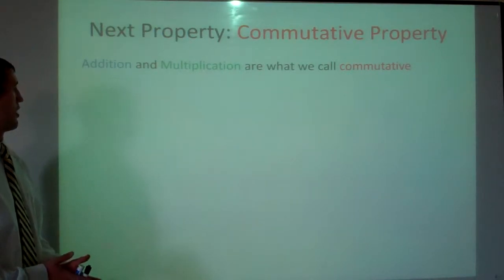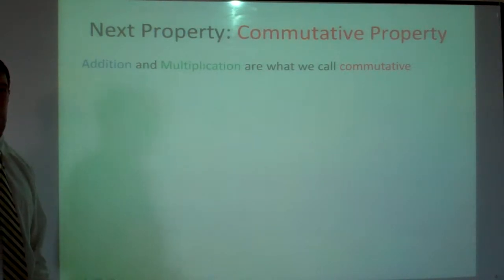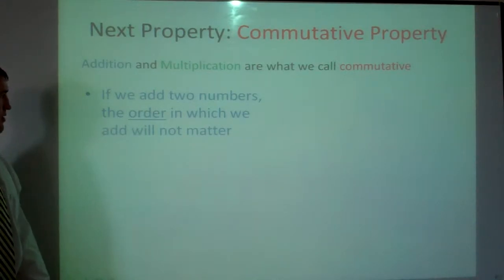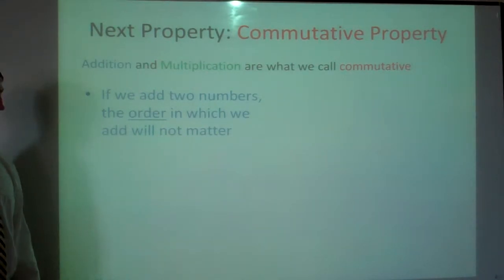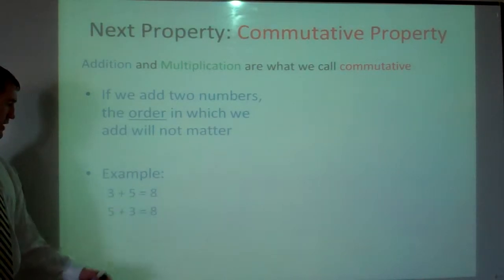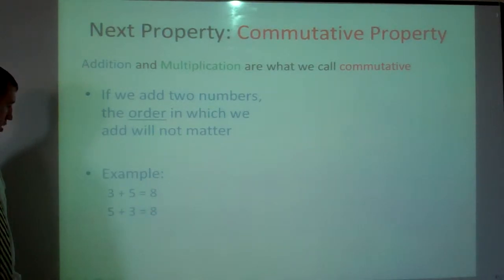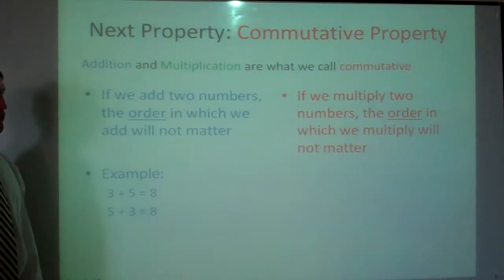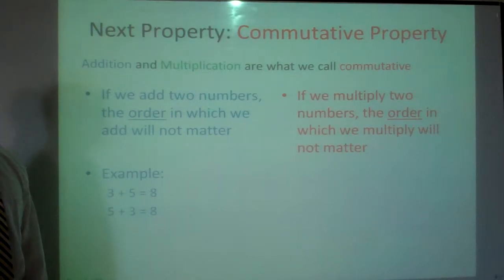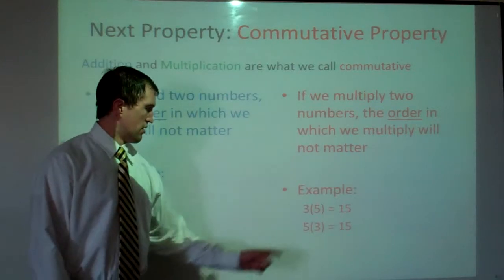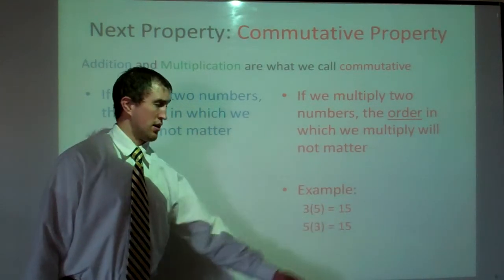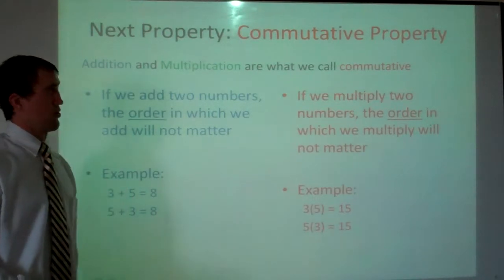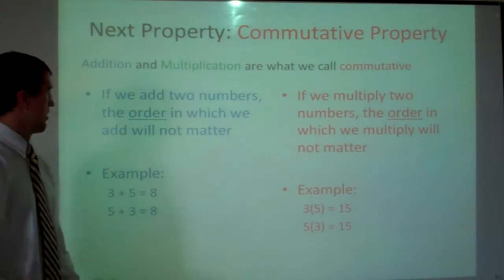The commutative property says that addition and multiplication are commutative. For addition, if we add two numbers, the order in which we add will not matter. For instance, three plus five equals eight, and five plus three equals eight — we just switched the three and the five and still get eight. For multiplication, three times five is fifteen and so is five times three. Switching the order doesn't matter — we still get the same answer.